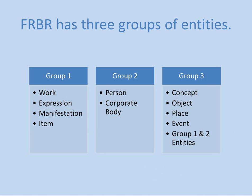FRBR has three groups of entities — get used to this terminology because you'll see it in the RDA rules. Group one deals with the items in our catalog: work, expression, manifestation, or item. Group two is the people responsible for creating these items. Group three is things that can be the subject of an item — things that would be subject headings, like a concept, a place, or an event. A book can also be about another book or a person, so group one and two entities can also belong in group three.